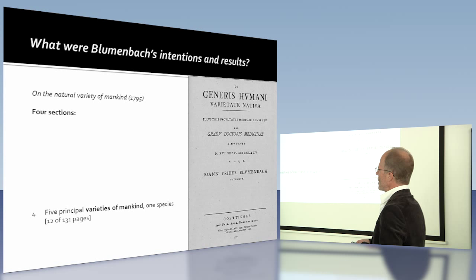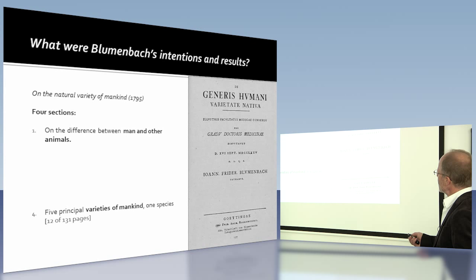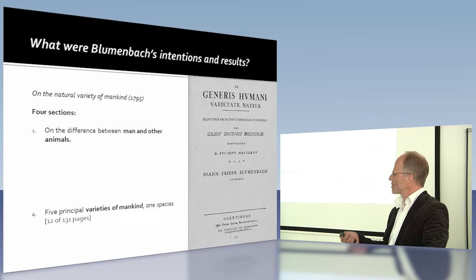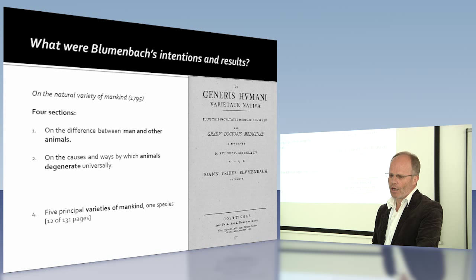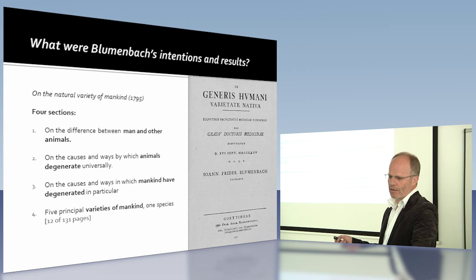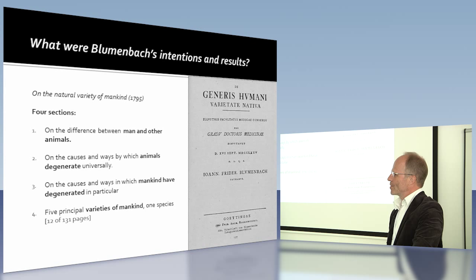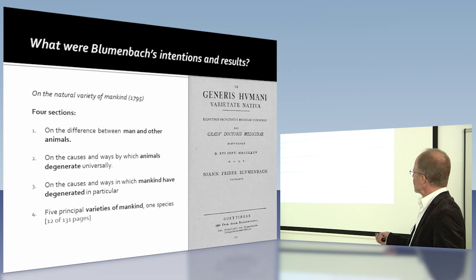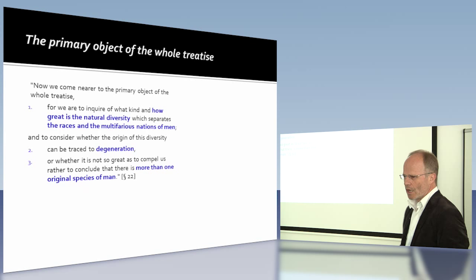So what is Blumenbach actually talking about? The first section is on the difference between man and other animals. Then on the causes and ways by which animals degenerate — degenerate in a neutral understanding means change universally. And then on the causes and ways in which mankind have degenerated in particular. So it's a long argument that Blumenbach presents, and his racial distinction of varieties is just one minor part in the whole argument.